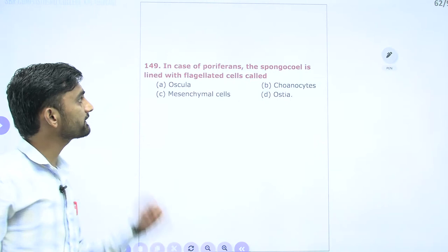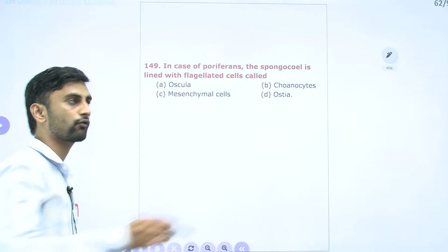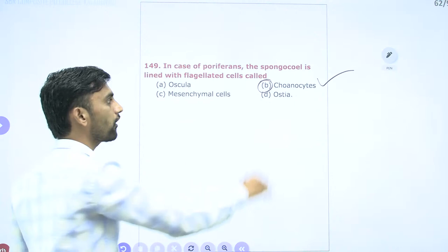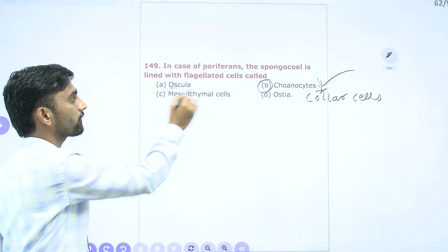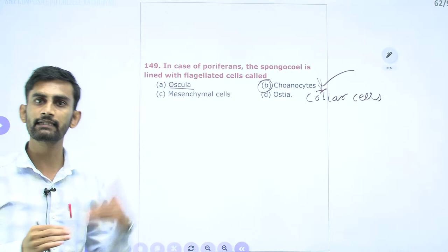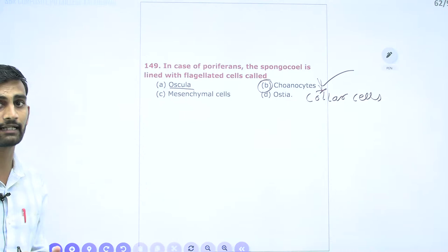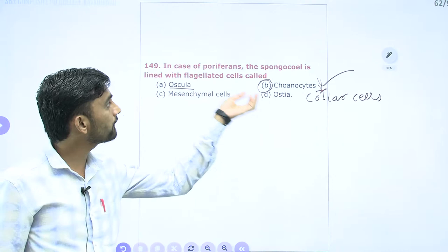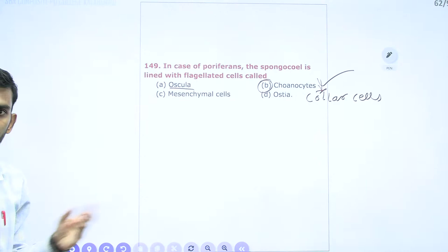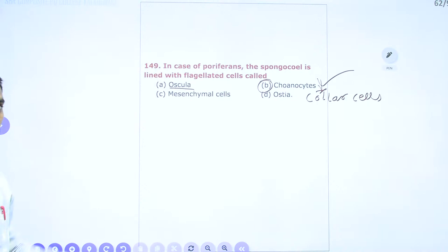Question 149: In Porifera, the sponge spongocoel is lined with flagellated cells called choanocytes, also known as collar cells — both names are same. Osculum is the largest opening in the sponge body through which extra water and undigested food exit. Osculum is always single; ostia are many openings throughout the body through which seawater enters the canal system.